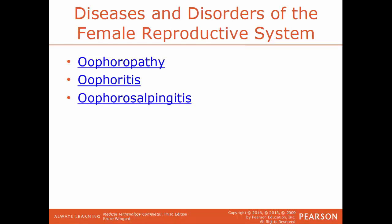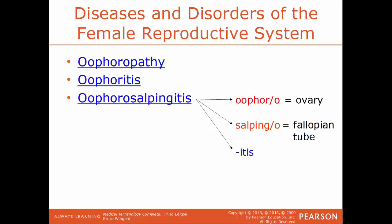Oophoropathy is a general term referencing any disease of the ovary. Oophoritis is the inflammation of the ovaries. Oophorosalpingitis — breaking it down: oophoro means ovary, salpingo means fallopian tube, itis means inflammation — so this condition is the inflammation of the ovaries and the fallopian tubes.